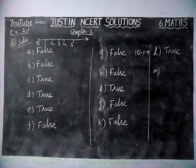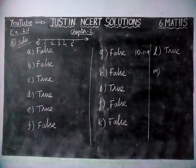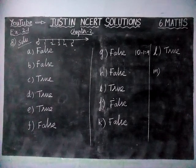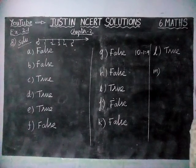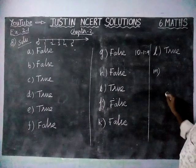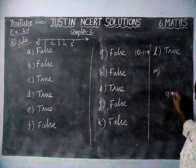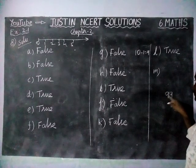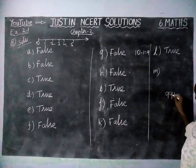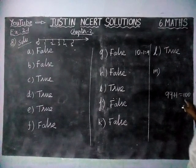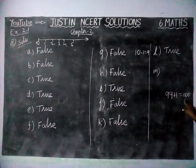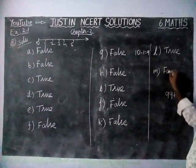Next, last question, option M: 'The successor of a 2-digit number is always a 2-digit number.' This statement is also false, because 99 is a 2-digit number and when we add 1, we get 100, which is a 3-digit number. So this statement is false.